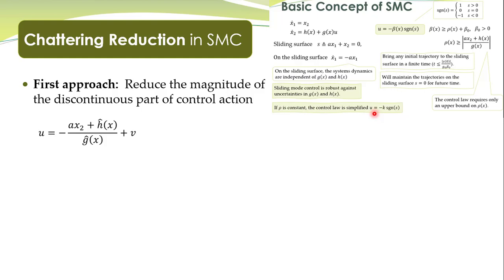We have proved it. Now instead of using the original control action, we are using a new control law, and we have to prove that this control law also brings any initial trajectory to the sliding surface and maintains the trajectories on the sliding surface. We can follow exactly the same procedure as we had done earlier while proving the original controller.